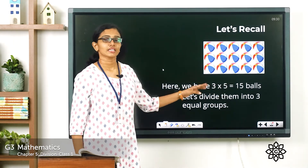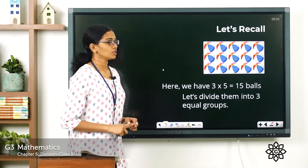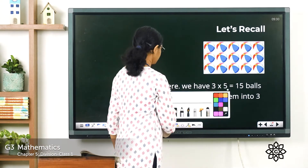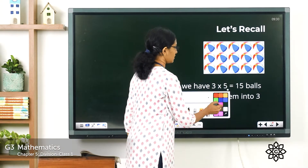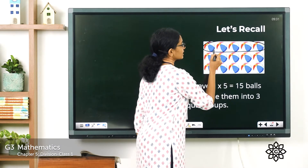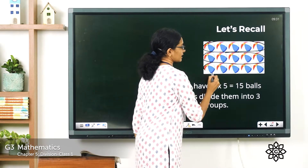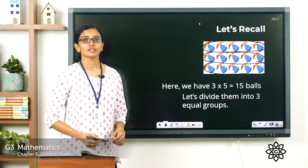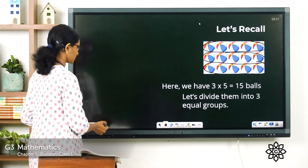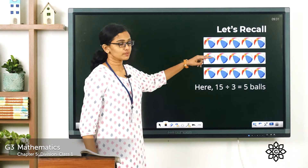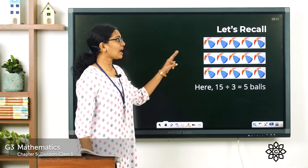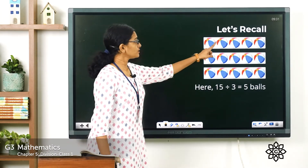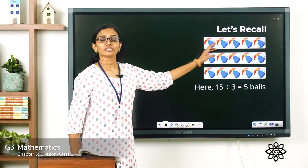Now let's divide these balls into 3 equal groups. How would we divide into 3 equal groups? Let this be 1 group, let this be another one, and let this be another one. So we have made these balls into 3 equal groups. And how many balls are there in each group? 5 balls in each group.